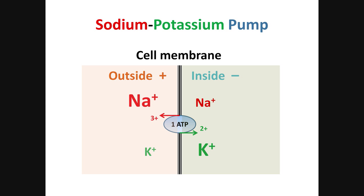For each ATP molecule used, three sodium ions get out and two potassium ions get in. I always forget which one is three and which one is two, but I remember that the electrical balance is negative: three pluses out and two pluses in means a loss of one plus for the cell, which makes the cytoplasm less positive and more negative. Also, I remember that there is more sodium outside, which means that three pluses out is for sodium as it goes from low level to high. Then two pluses in is for potassium, which also moves from low level to high.